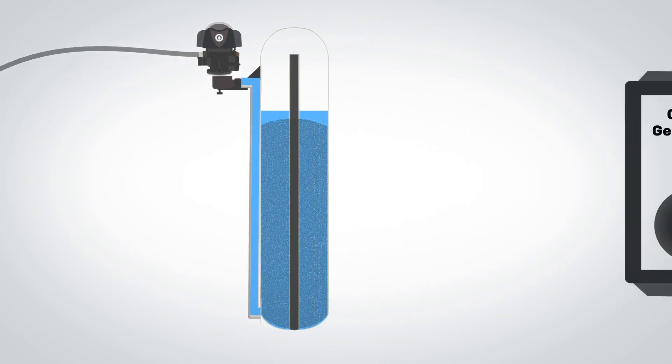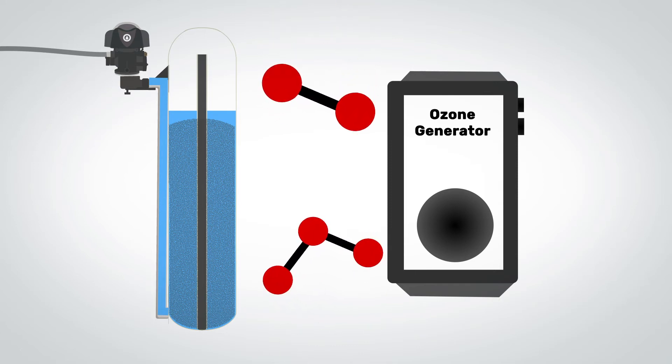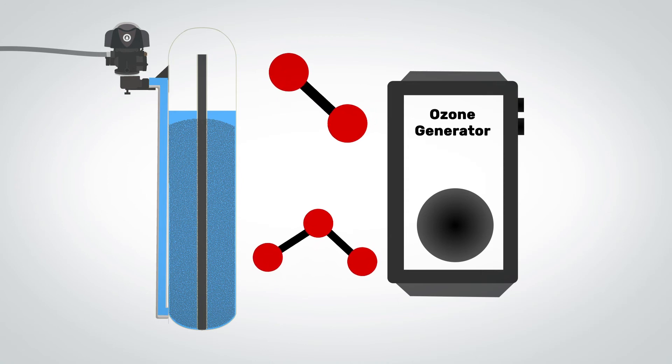If our optional ozone generator is being used, this step would look the same, except instead of drawing in air, the injector would be drawing in ozone created by the generator, which would help to inhibit bacterial growth in the media bed.